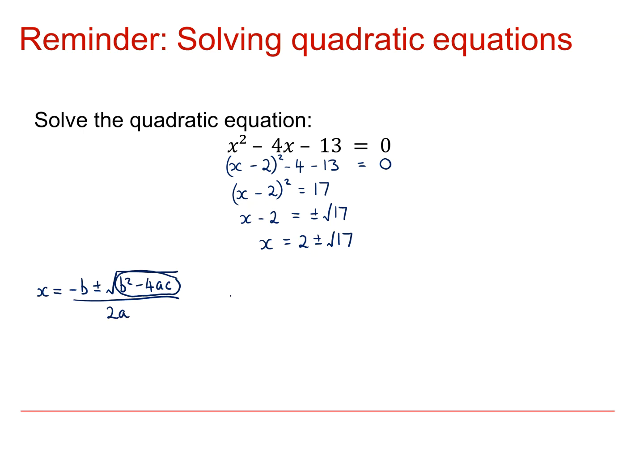In our case, we've got b squared is minus 4 all squared minus 4 times 1 times minus 13. That comes out to be 16 plus 52, which is 68. So that's greater than 0.